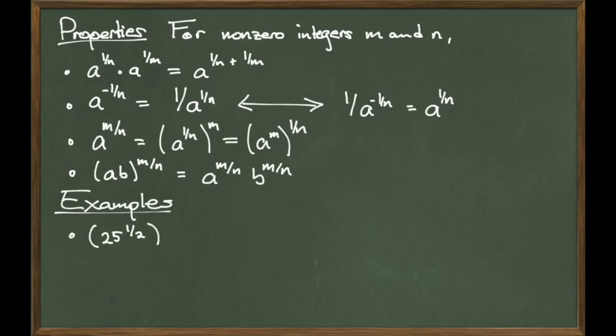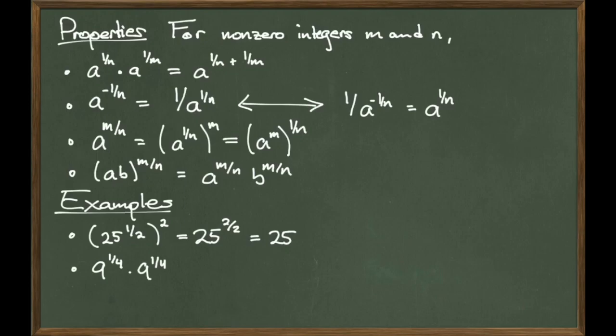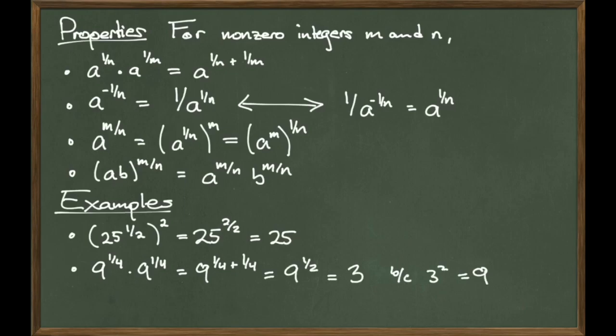Let's look at some examples. Consider 25 to the 1-half power, all raised to the second power. Use the third property on the list above to rewrite the expression as 25 to the 2 over 2 power, and since 2 over 2 equals 1, we just get a final answer of 25. Now consider 9 to the 1-fourth times 9 to the 1-fourth. Using the first property on the list above, we can write the expression as 9 to the 1-fourth plus 1-fourth. 1-fourth plus 1-fourth comes out to be 1-half, so we can rewrite the expression as 9 to the 1-half. Finally, we can say that 9 to the 1-half is equal to 3, because 3 squared is equal to 9. Here we would say that 3 is the second root of 9, or, how it's more commonly said, 3 is the square root of 9.